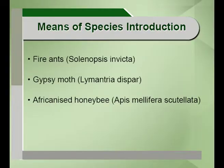Examples of introduced insects include the European honey bee (Apis mellifera) and European bumblebee (Bombus terrestris), introduced intentionally for economic purposes, and the fire ant, gypsy moth, and Africanized honey bee, introduced accidentally. The European earthworm has also been introduced to North America, causing significant changes to the soil ecosystem as an ecosystem engineer, altering soil properties considerably.